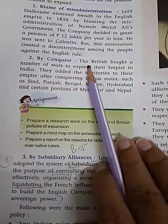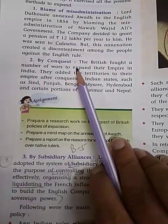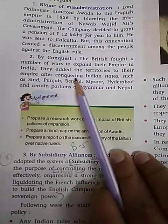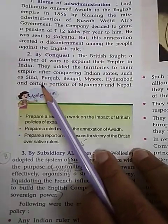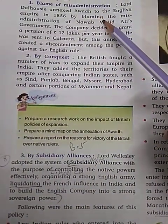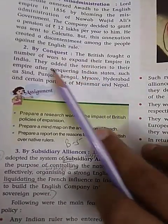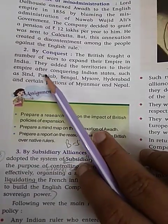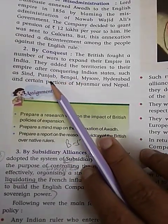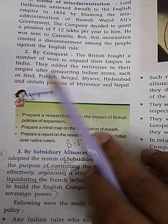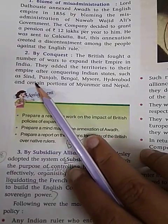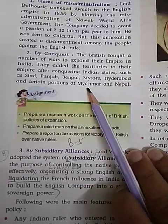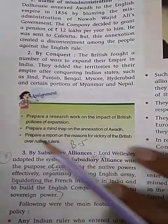The second method is by conquest. The British fought a number of wars to expand their empire in India, adding territories after conquering Indian states. The territories conquered through warfare included Sindh, Punjab, Bengal, Mysore, Hyderabad, and certain portions of Myanmar and Nepal.